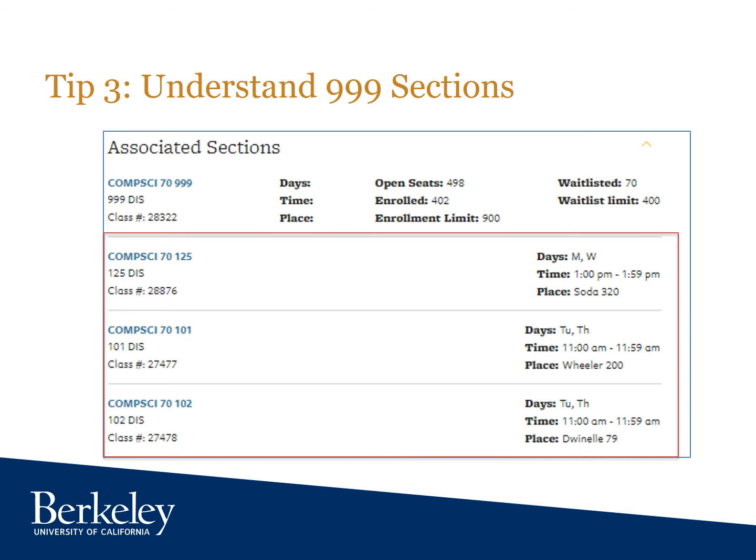Students often ask how to get into the actual sections. During the first week of classes, the teaching staff will reach out to you — it really varies from class to class. Some teaching staff don't care which section you go to as long as there are seats available. Other classes do care, and the teaching staff will send out links to online sign-up web apps, Google documents, or Google forms. So if you're signing up for a 999 class, just be patient — someone will reach out with more information about how to get into the section you want.